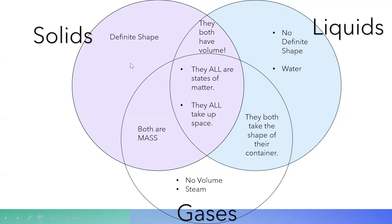Now let's review. For solids, a fact that is only for solids is that they have a definite shape. Down here for gases — only gases — gases have no volume, and an example of a gas is steam. Over here, the facts that are only about liquids: liquids don't have a definite shape, and an example is water.